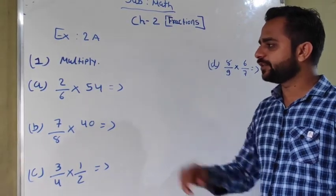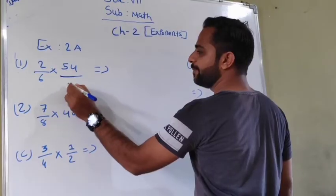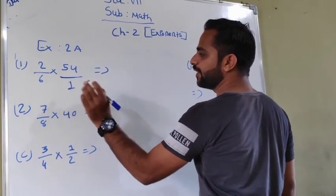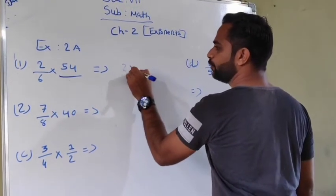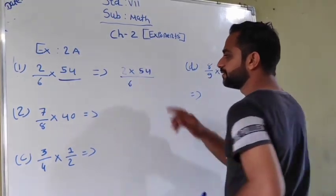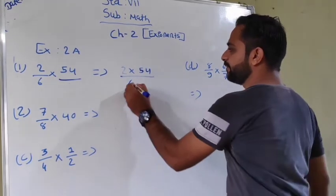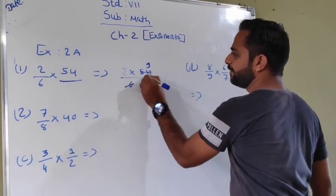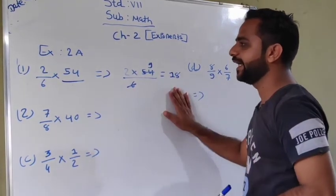First point is multiply 2 upon 6 multiply by 54. So here we have 2 multiply by 54 upon 6. 54 divided by 6 is 9, and 2 times 9 is 18. The answer is 18.